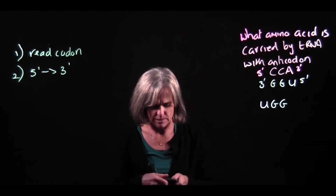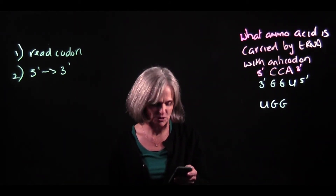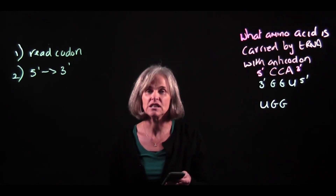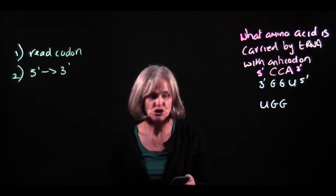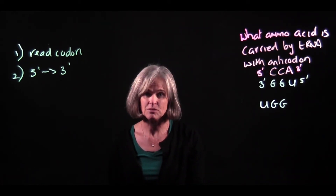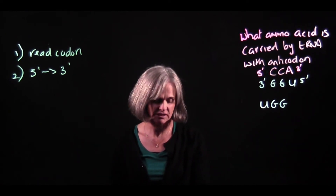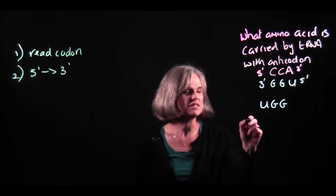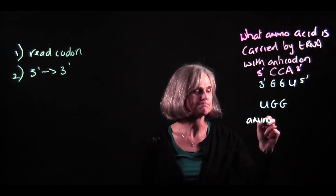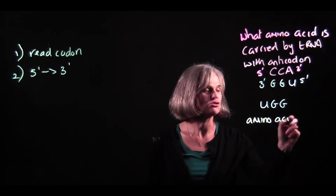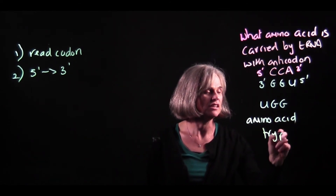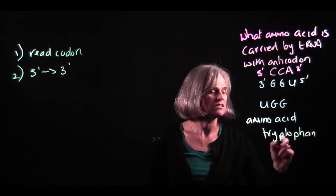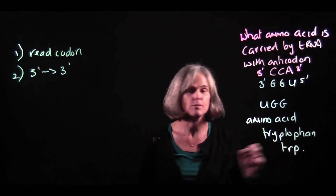I'm going to open up my app and look up UGG in the codon picker. You can also look up a codon table that you've been given. UGG encodes the amino acid tryptophan, sometimes abbreviated TRP.